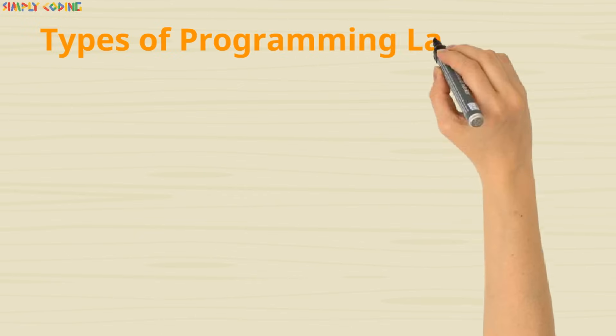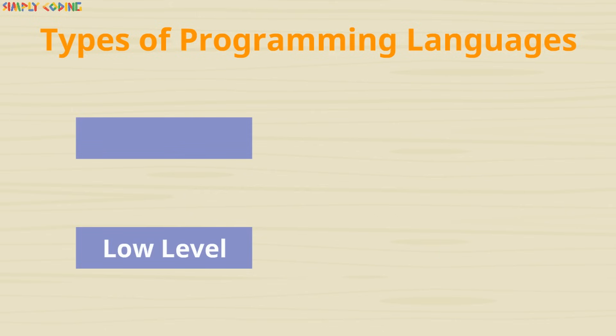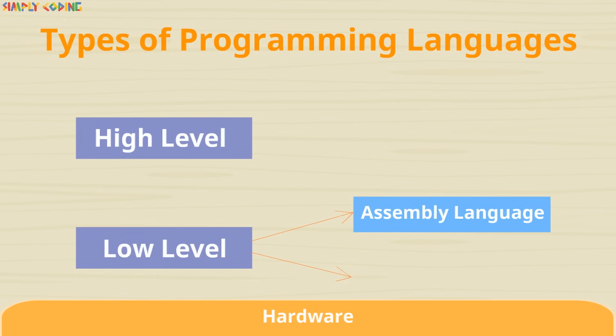There are different types of languages. The programming languages are divided into two types, low level and high level. Low level is a language which machine understands and is of two types, assembly and machine language.